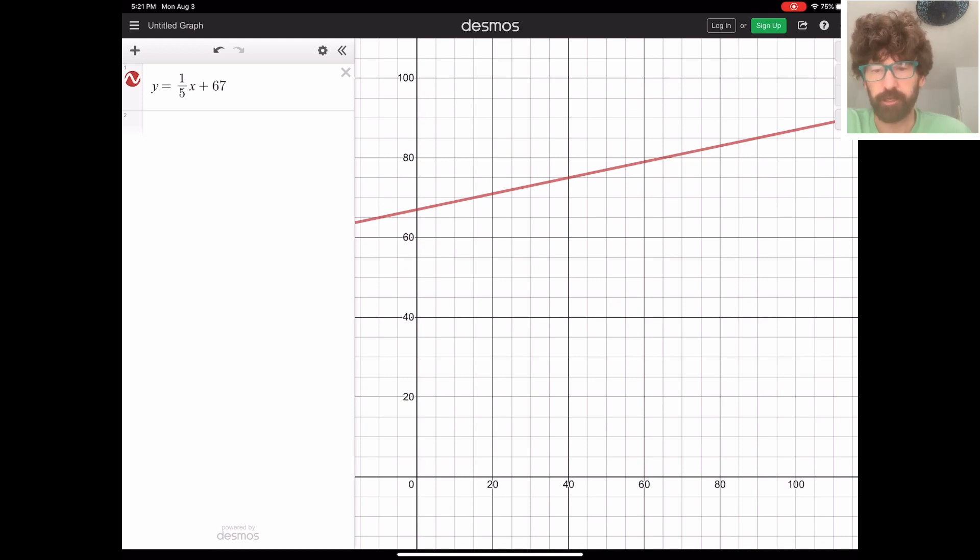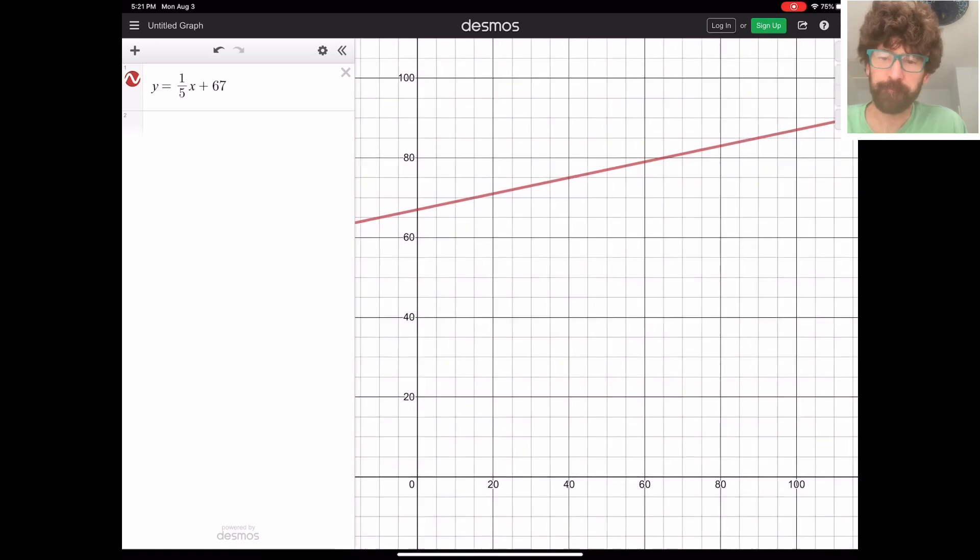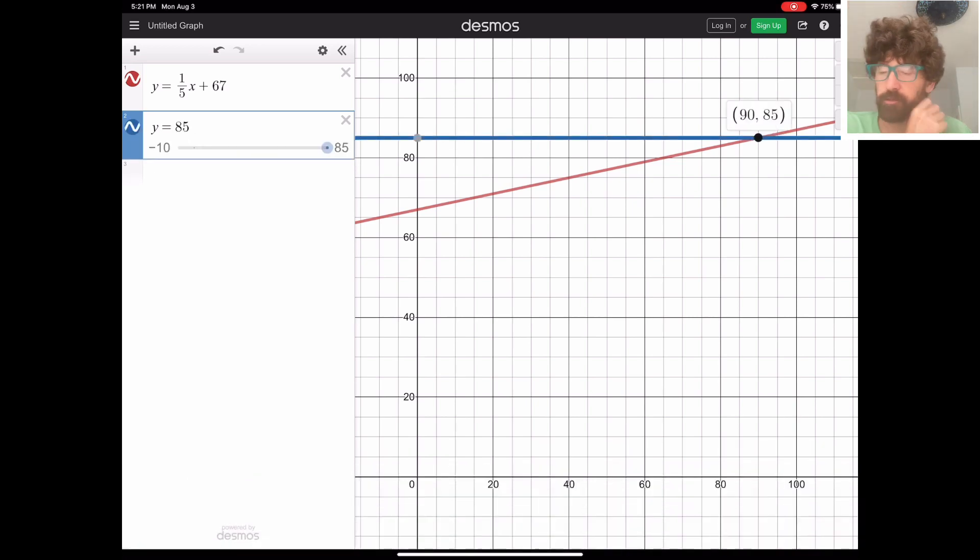And this is just plotting how our values change depending on how we do. So let's see if we get a 50 on the final exam, there's the 77 we get in the class as a whole. And if we get 100 on the final exam, there's the 87 right there. Okay, I think it's nice to graph just a y equals 85. That was our goal here. We want an 85 in the final grade. So it looks like what we need to do is get a 90% on the final exam to be able to get an 85 overall in the class.